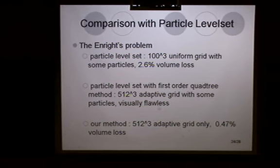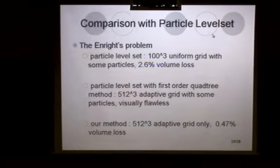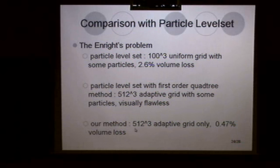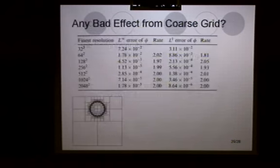We compared our results with the particle level set. In the original particle level set by Doug Enright et al., they used 100-cube uniform grid with some undocumented number of particles. They obtained 2.6% of volume loss. Lately, they published particle level set with quadtree method. In their case, they used first-order quadtree method. They used 512-cube adaptive grid with some particles, and they didn't report volume loss. They just said visually plausible. I think visually, I couldn't tell the difference between our result and their methods. In our method, 500-cube adaptive grid only, no particles. We obtained 0.47% of volume loss.